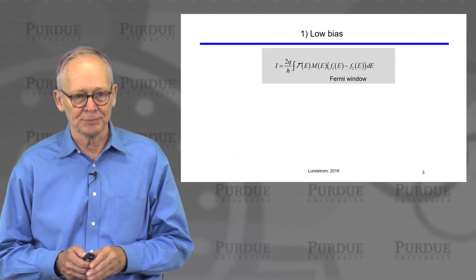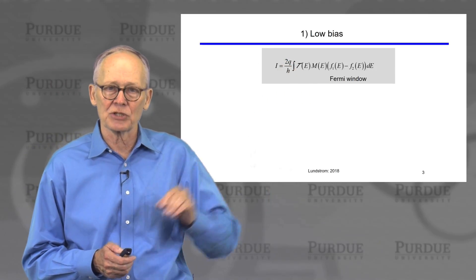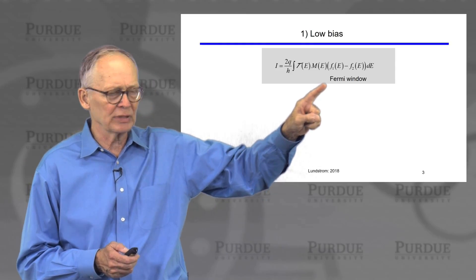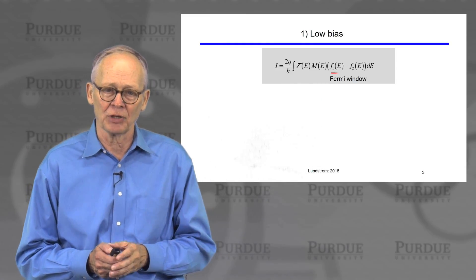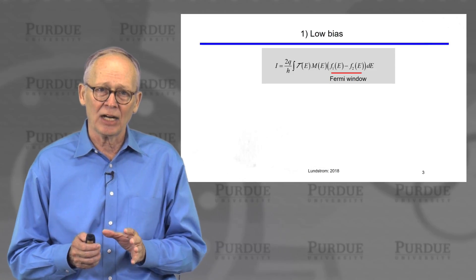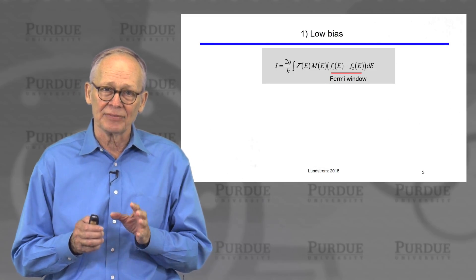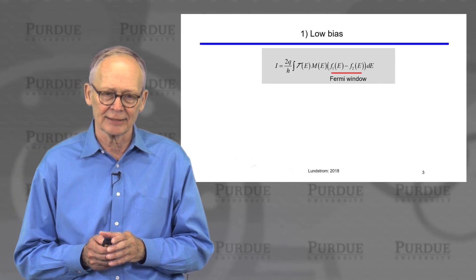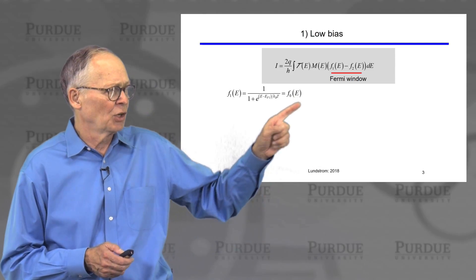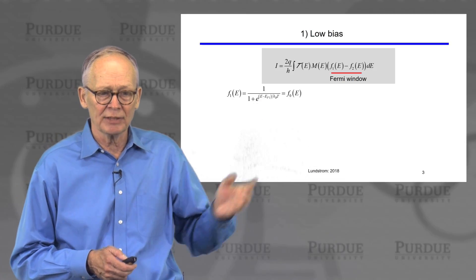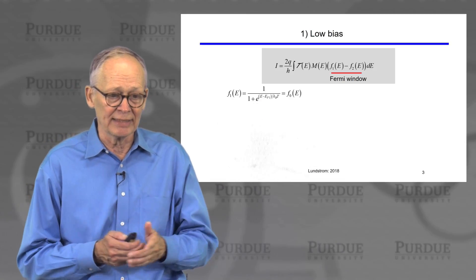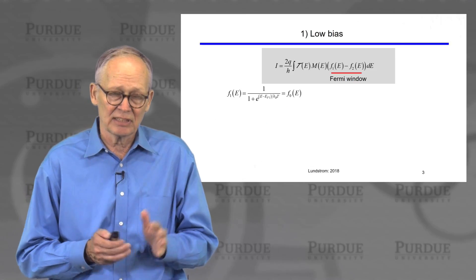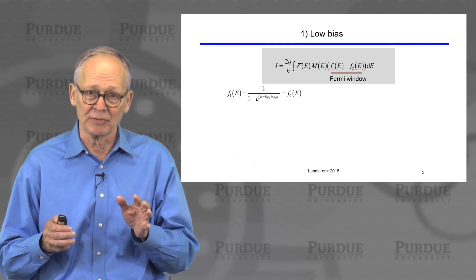Let's do low bias first. Here's our general expression for current flow in a nano device. I'm going to focus on this Fermi window and we'll see how it can be simplified if there's only a small difference between the Fermi functions in the two contacts. The Fermi function in contact one will be given by the conventional expression — this is basically the equilibrium Fermi function.